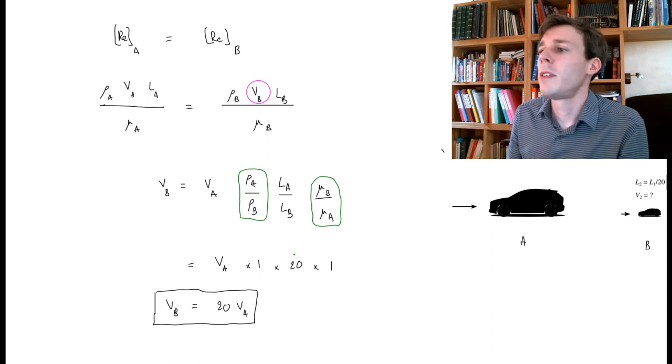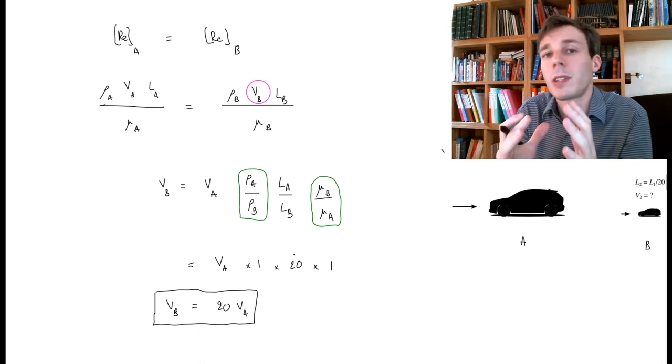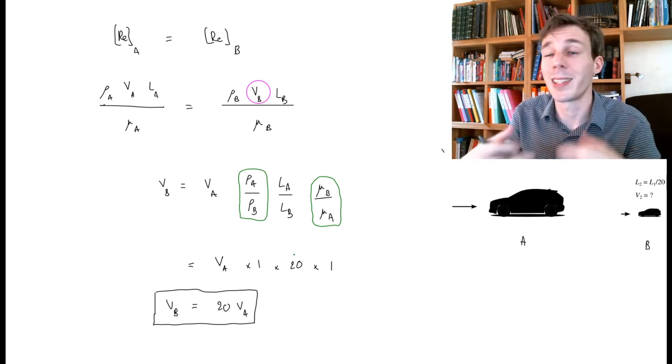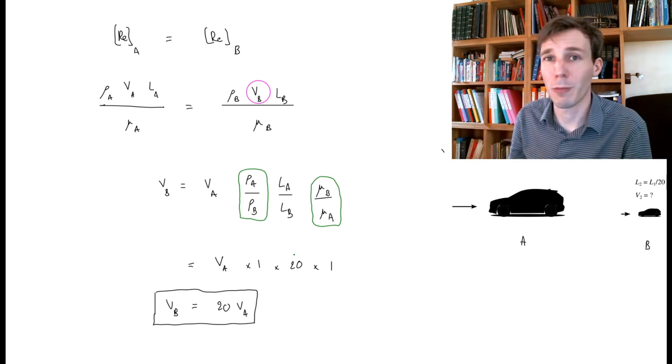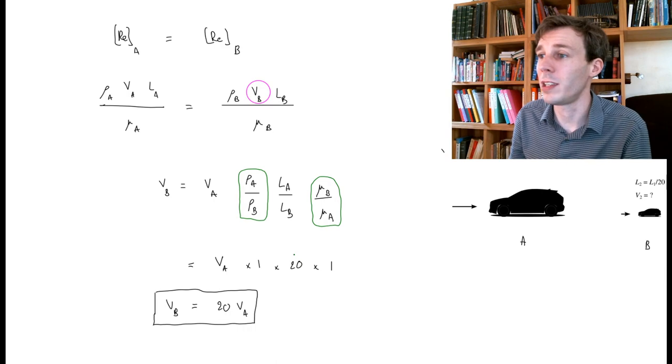Equate the Reynolds number. You squeeze down the size of something means you have to increase the velocity by the same amount. This means it may not be easily done in practice.